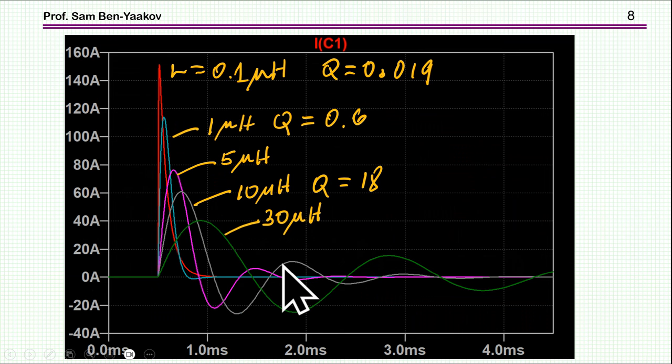Now I'm sweeping the inductance between very low inductance—0.1 microhenry is very low, so it's almost like without an inductance. You see there is no oscillation here, and the peak is very close to 170. So this is practically the case of no inductance.